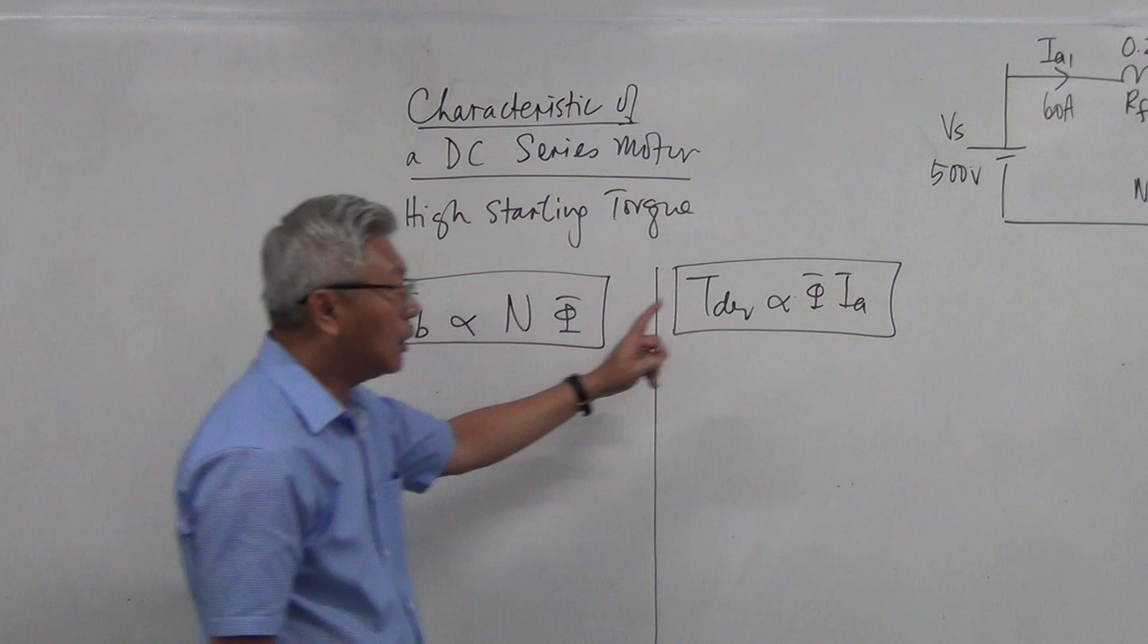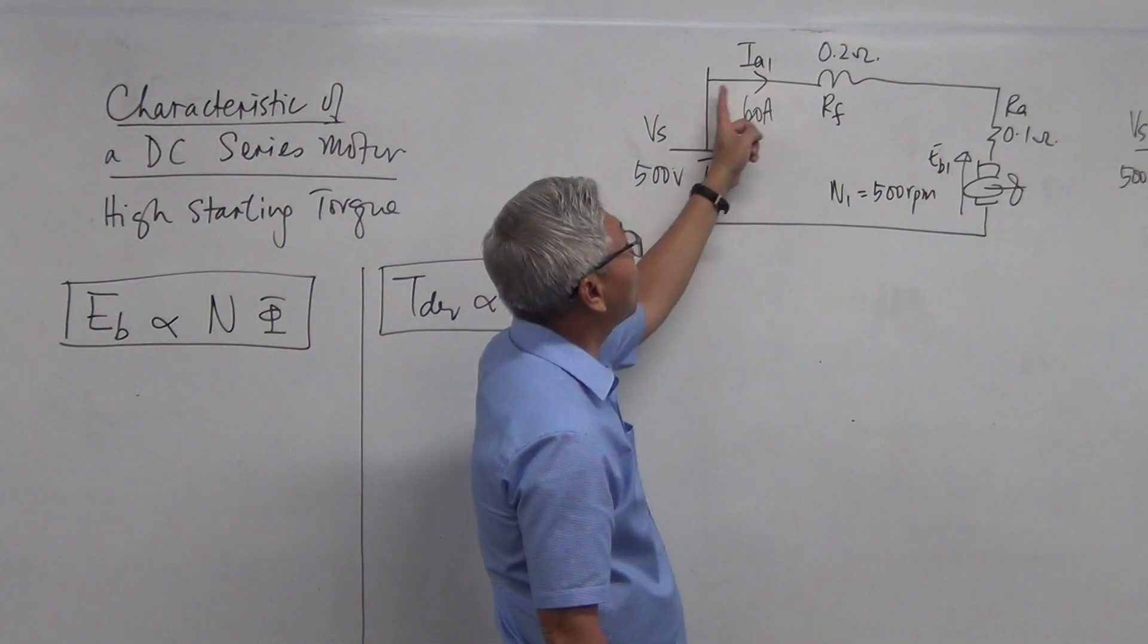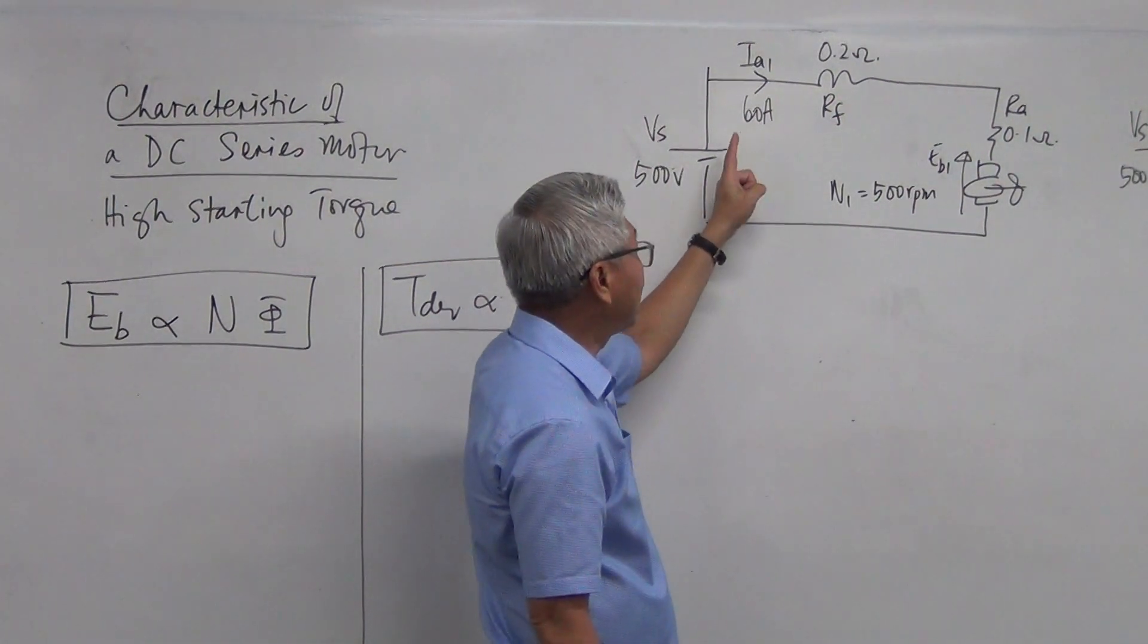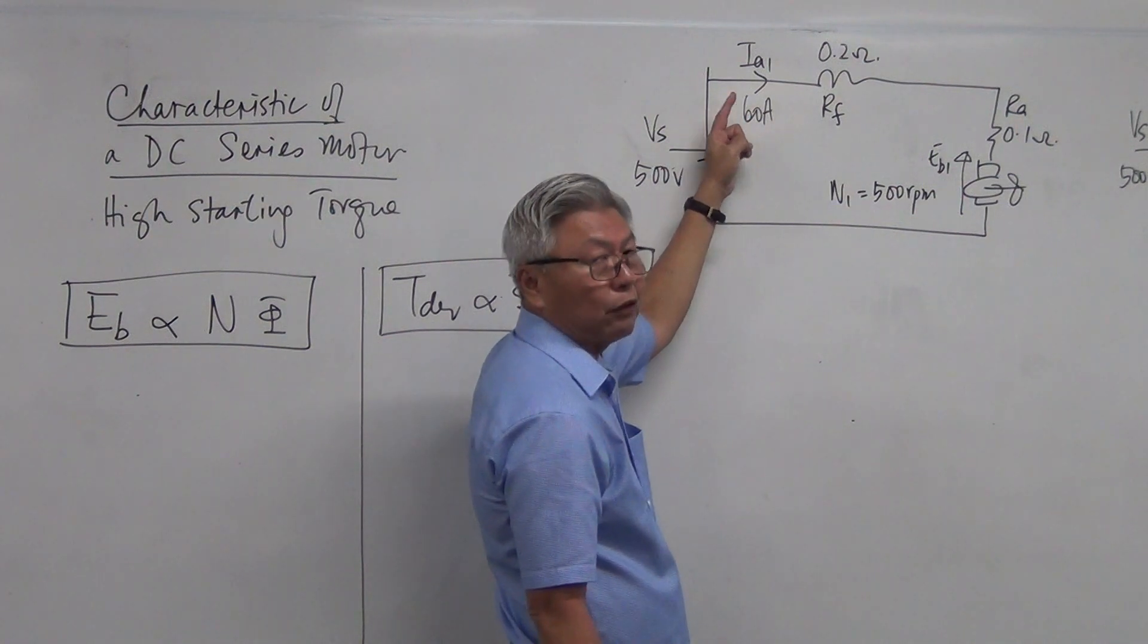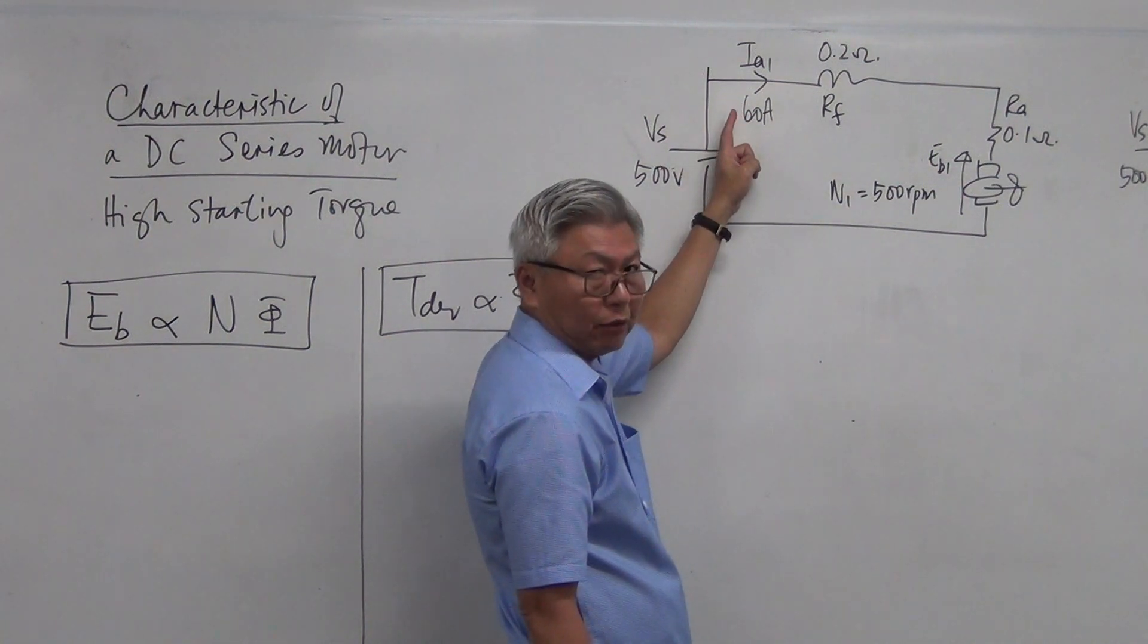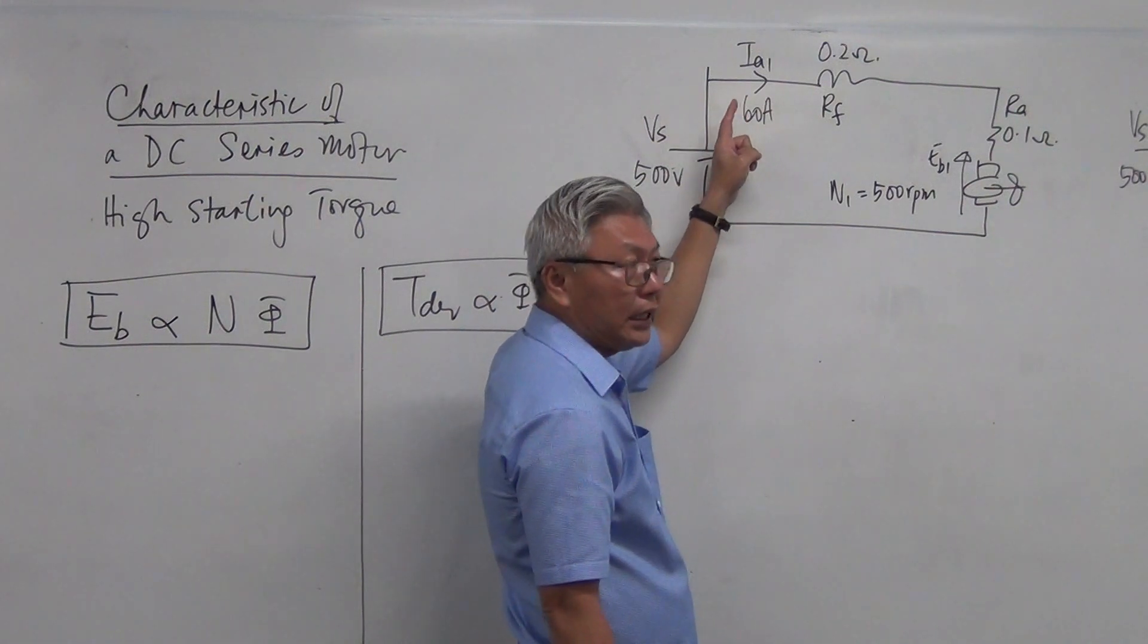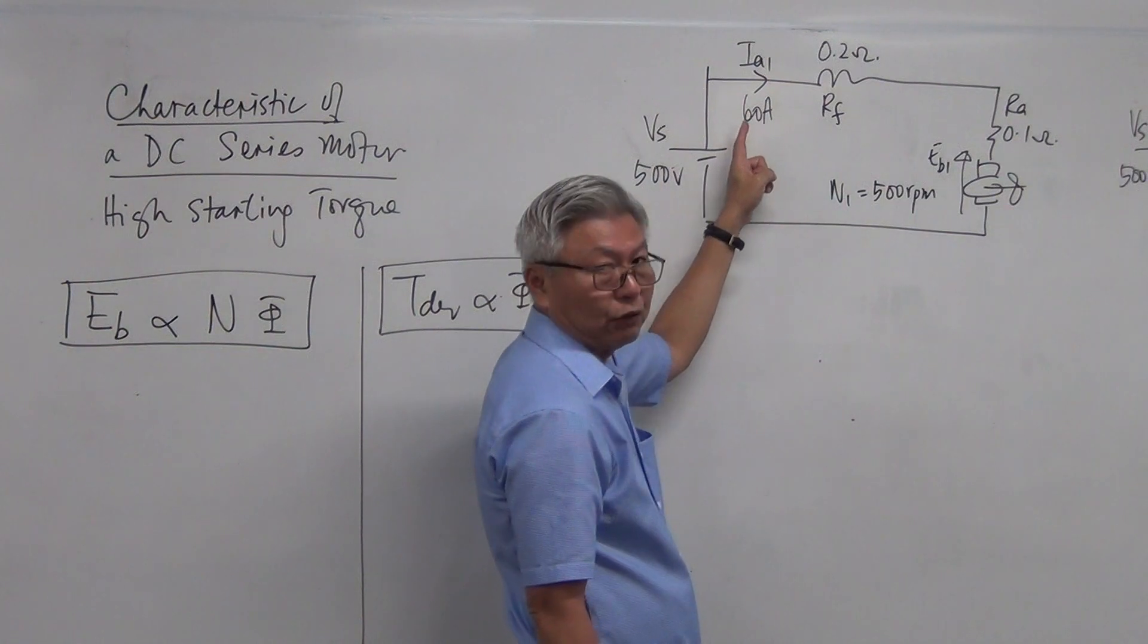And if you recall our series motor diagram here, there is only one current that passes through our series motor. And I have already mentioned before, we could call it IL line current, we could call it field current, we could call it armature current. But let us call it armature current because in our mathematics, it's easier and less confusing to yourself.